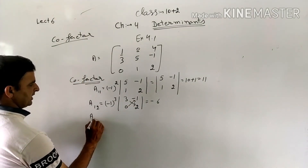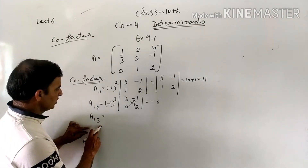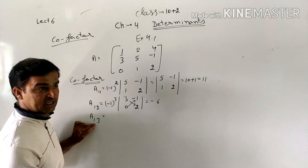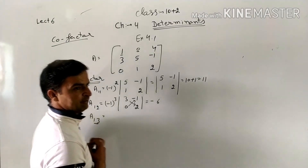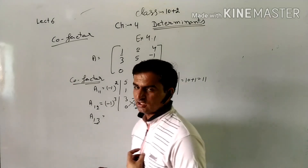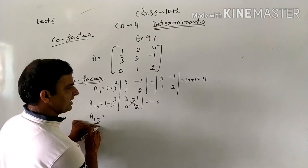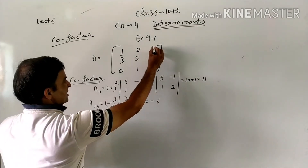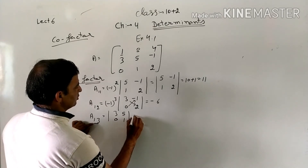A13: sum 1+3=4, which is even, so no minus sign. Element at position 1,3 is 0. Deleting its row and column leaves [0, 5; 4, -1] — wait, we leave row 1 and column 3: [3, 5; 0, 1] — determinant = 3×1 - 5×0 = 3. So A13 = 3.